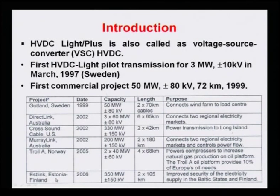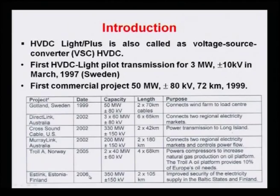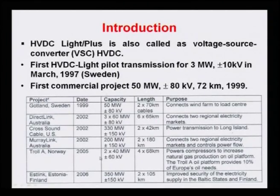In Finland, a project commissioned in 2006 carries 350 MW at ±150 kV over 105 kilometers using two bipoles. This was used to improve security of electricity supply in the Baltic states and Finland. This is one of the bigger listed commercial projects. From 2000 onward, many more projects have been commissioned, and future HVDC will increasingly use VSC-based technology.